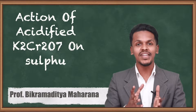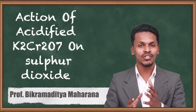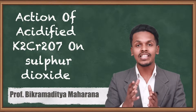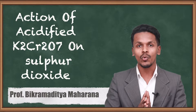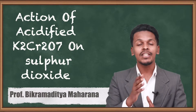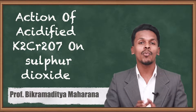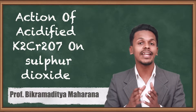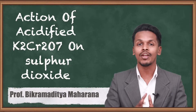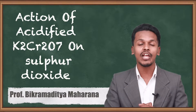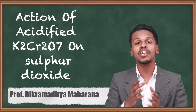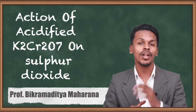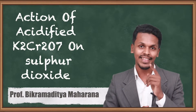Hello friends. In the previous topic we discussed the reaction of acidified K2Cr2O7 on hydrogen sulfide. Now in this topic we are going to talk about the reaction of acidified K2Cr2O7 on sulfur dioxide — specifically what the reaction is and what color change we could observe.